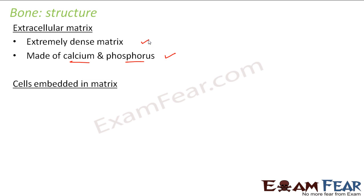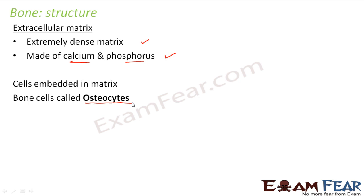Now, what are the cells that are embedded in the matrix? The bone cells embedded in the matrix are known as osteocytes. That is the name given to the bone cells. Overall, the structure of a bone has bone cells named osteocytes embedded in a very dense matrix made up of calcium and phosphorus.